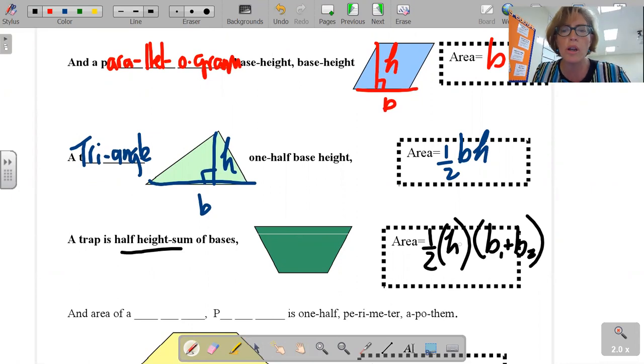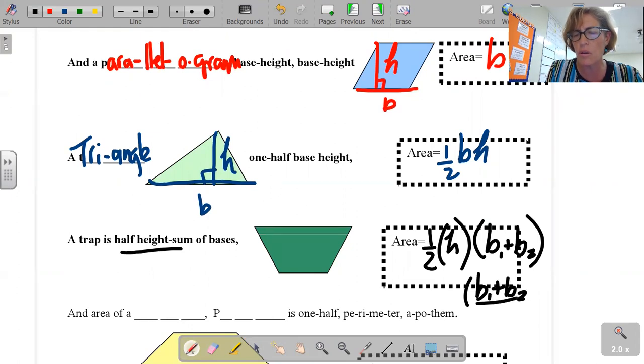This version of the equation, one-half height times sum of the bases, is the exact same thing as average the bases over two times the height. These are interchangeable.